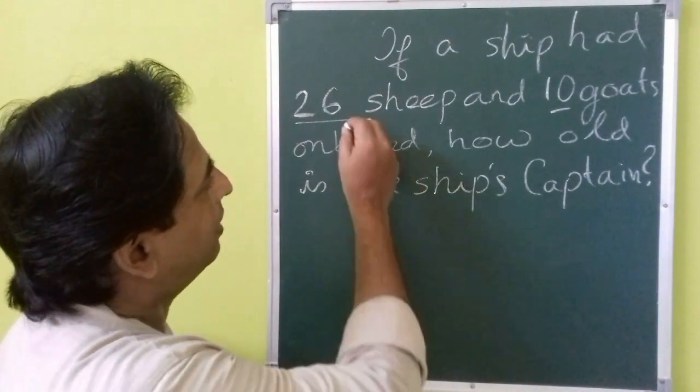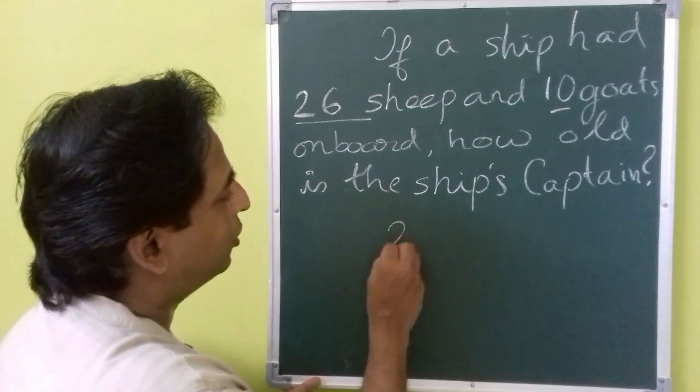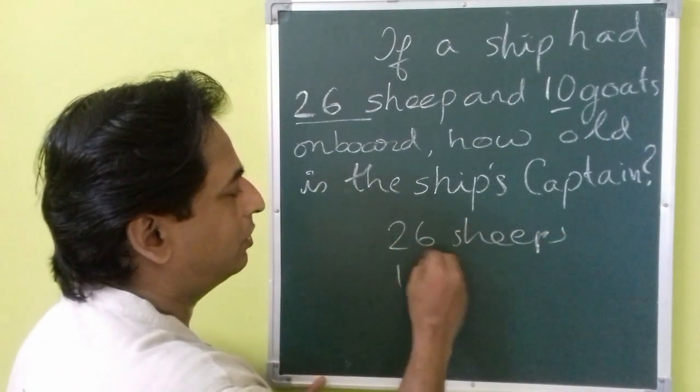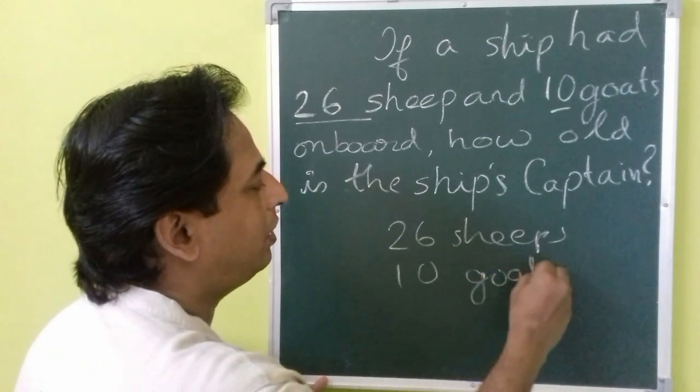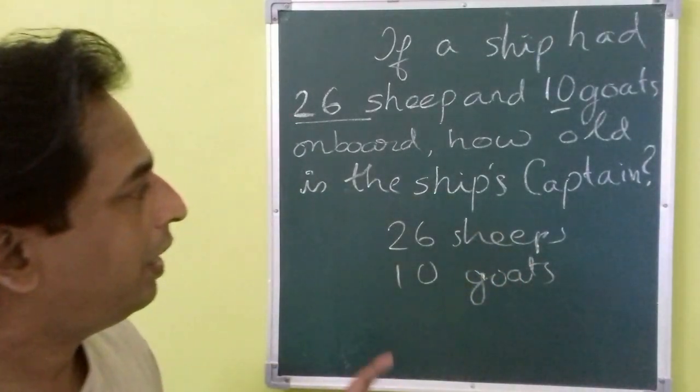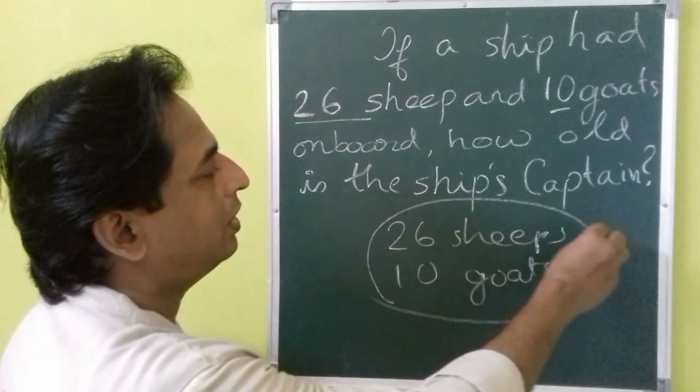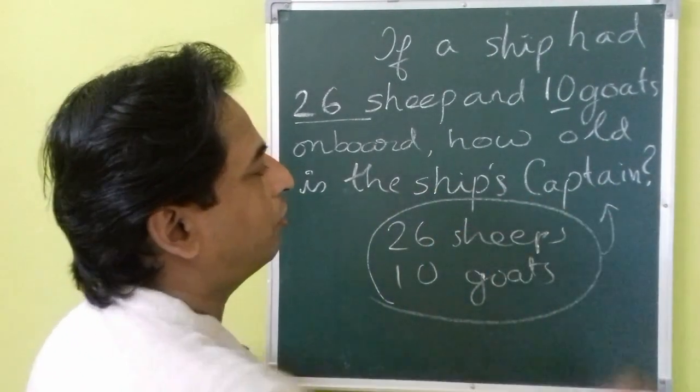So when you analyze the information that you have got, there are 26 sheep and 10 goats. This is the only information that we have, and is it any way leading to the age of the captain?